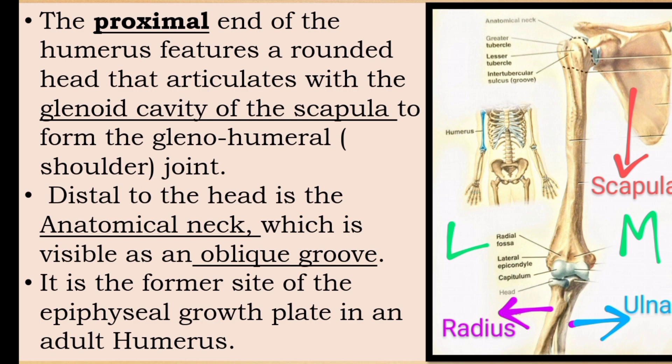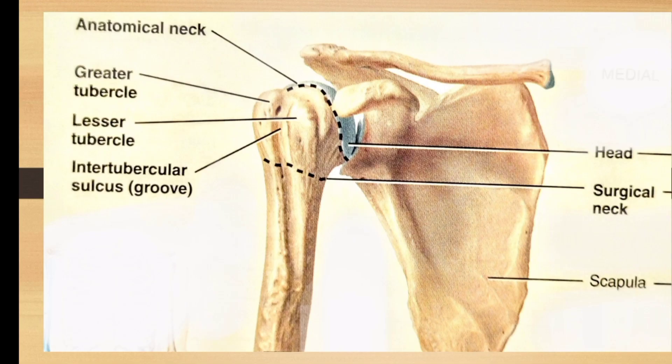Now, distal to the anatomical neck, there is a lateral projection called the greater tubercle. The greater tubercle is the most palpable bony landmark of the shoulder region.